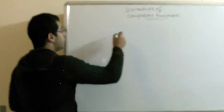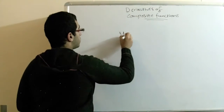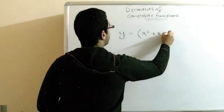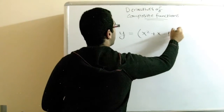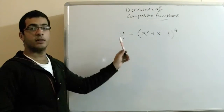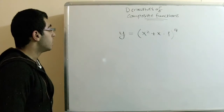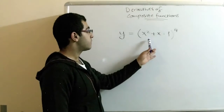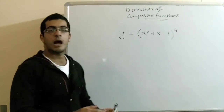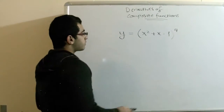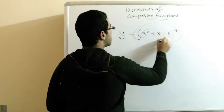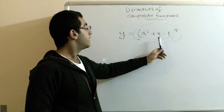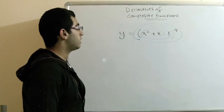So, if we have a function y which equals x to power 2 plus x negative 1, all of power 4, and we want to find the derivative of this function. What we actually do is deal with this function as a composite function — this is the first function and this is the second one: the power 4 on the outside and the expression inside the brackets.